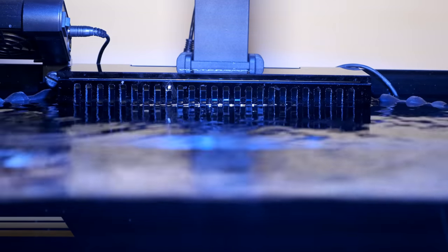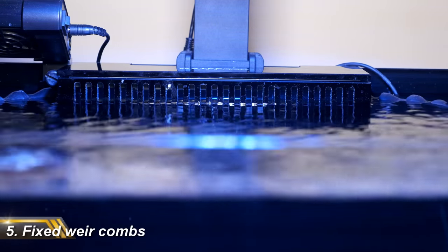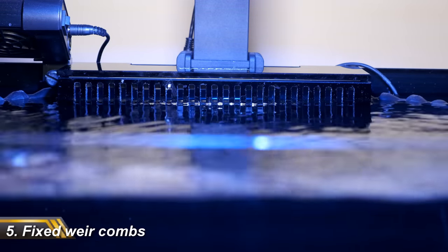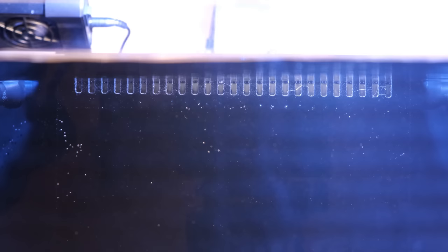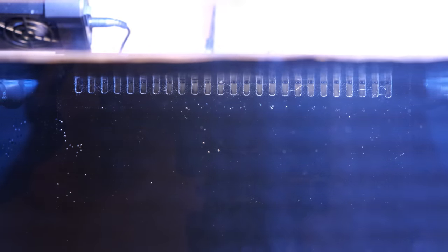The weir combs are also fixed in place, not removable, so when they clog with algae, which they inevitably will, you can't simply pop them out and clean them in citric acid. Instead, you'll have to scrub them in situ, which will involve more elbow grease, and will release all sorts of crap into your tank.